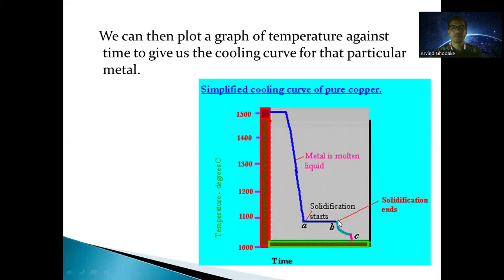At point B, the amount of solid is 100 percent and amount of liquid is zero percent, meaning solidification is completed and the entire liquid metal has converted into solid. From B to C there is again cooling of that metal from this temperature down to room temperature. There will be no change in microstructure or crystal structure, but refinement of grains occurs and stresses can be induced or reduced, affecting the properties of the metal. This is how the cooling curve for a pure metal is described.